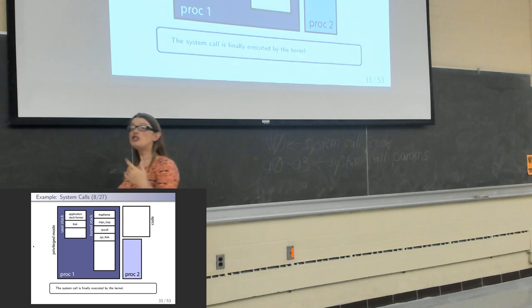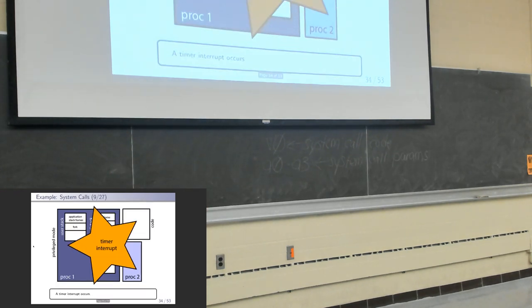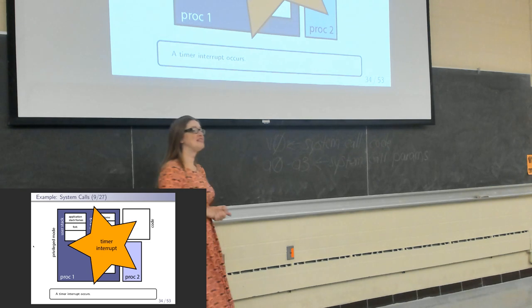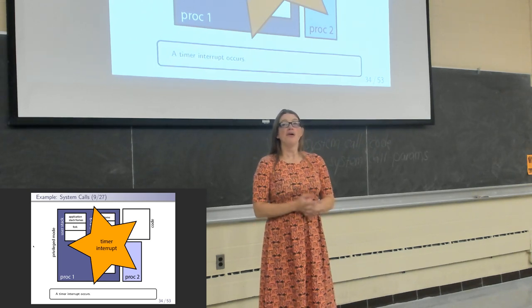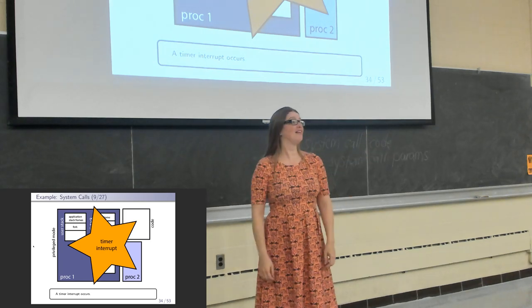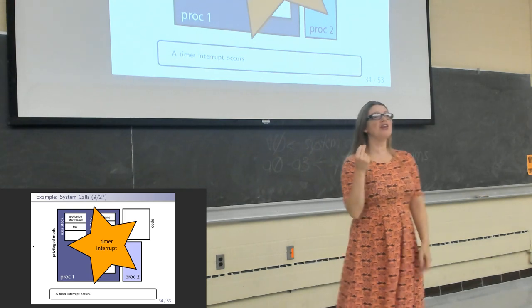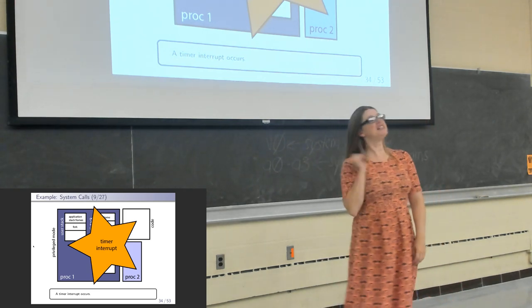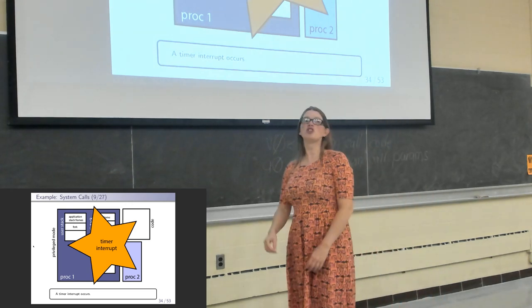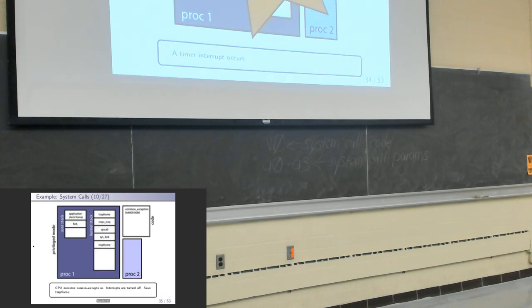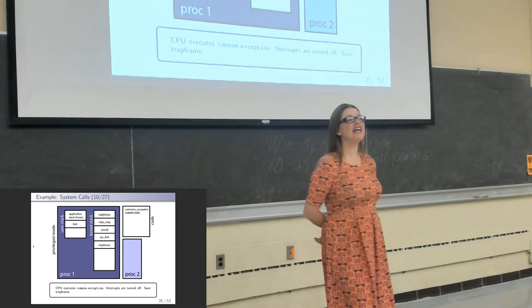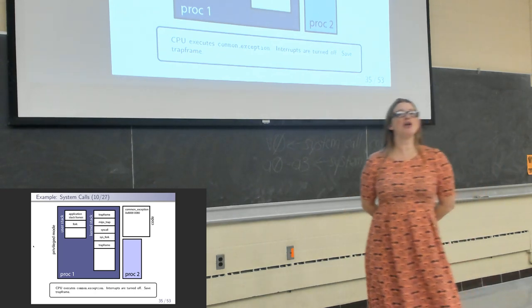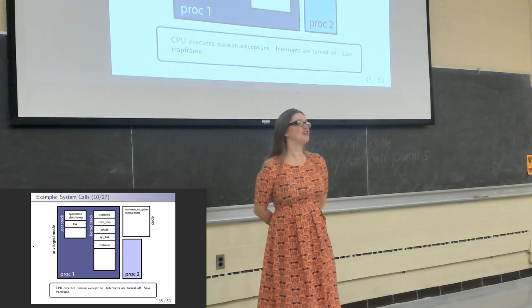Interrupts are on, which means you can be preempted while executing sysfork. So what happens to our stacks if we have a timer interrupt? When we receive the interrupt, the CPU is already in privileged mode so it doesn't have to make the stack switch. It disables interrupts and calls common exception. Common exception produces the trap frame. So on a timer interrupt, we call common exception and push a trap frame onto the kernel stack. Since we were already in privileged mode and already using the kernel stack, common exception checks this and just saves the trap frame.